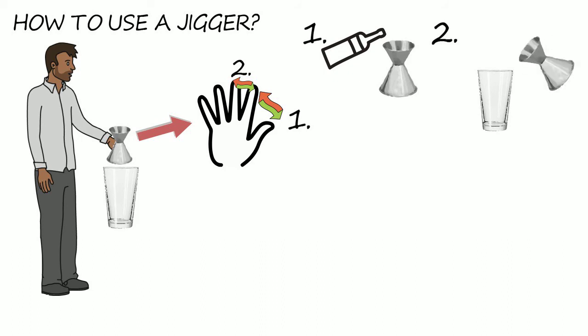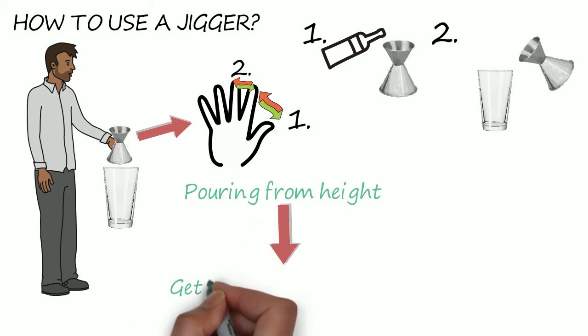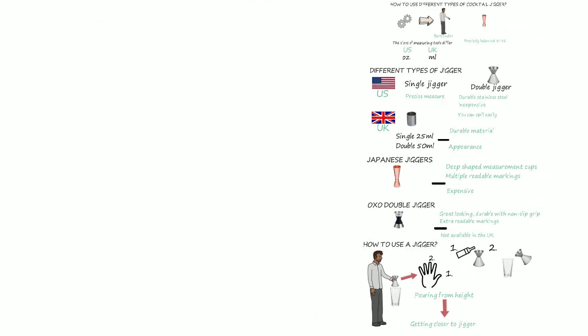It all takes time and practice, but if you'd like to master it, start pouring from a height and then with one move get closer to your jigger. This method reduces the flow of liquid as you pour and allows you to better control the pour of your spirit.